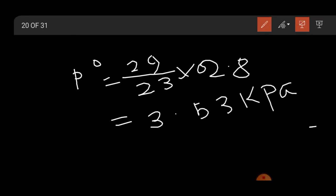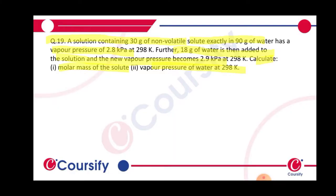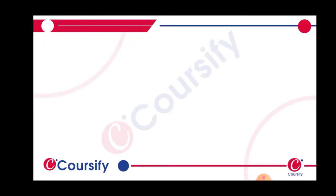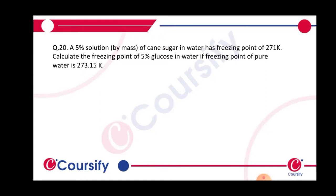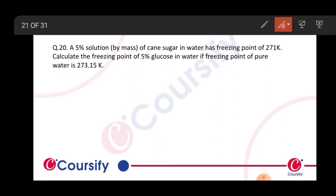Now let's go to the next question. A 5% cane sugar in water has freezing point 271. Calculate the freezing point of 5% glucose in water if freezing point of pure water is 273.15.